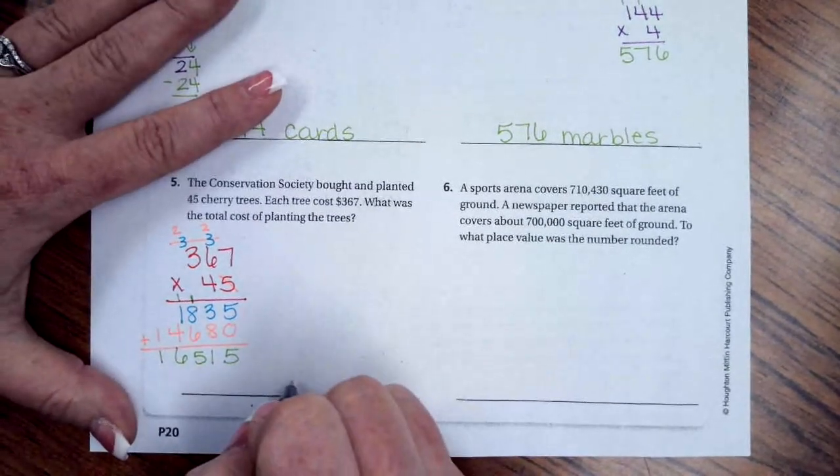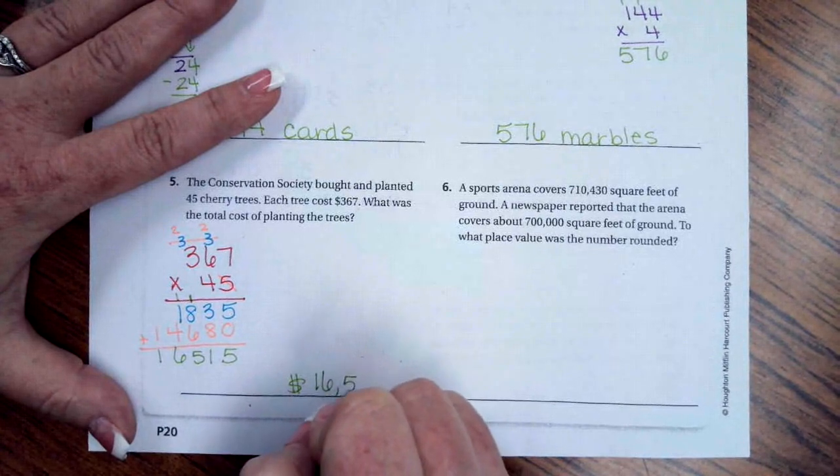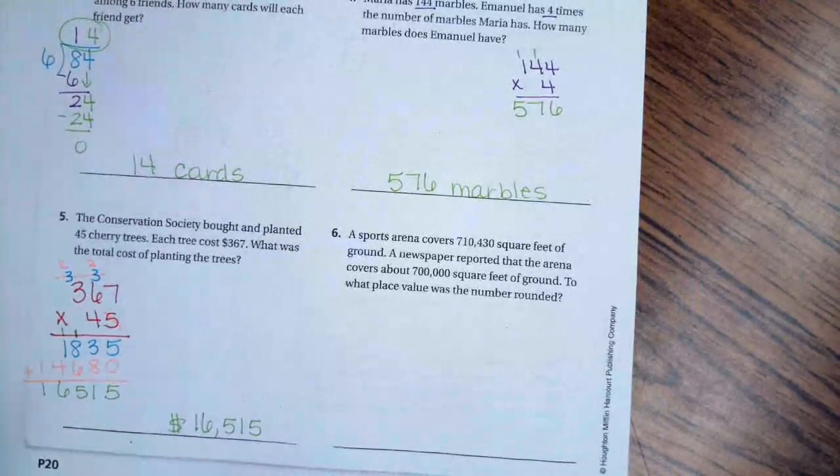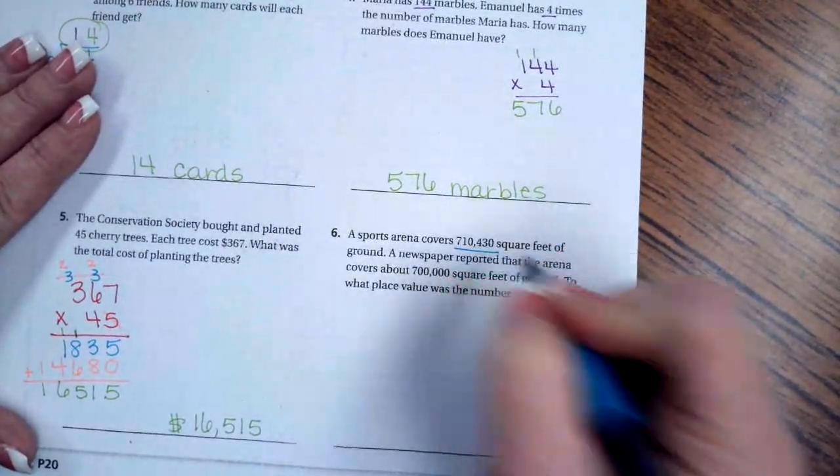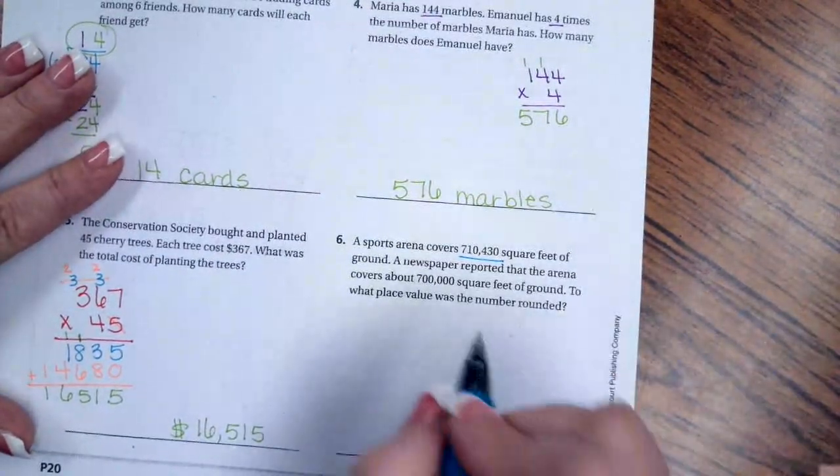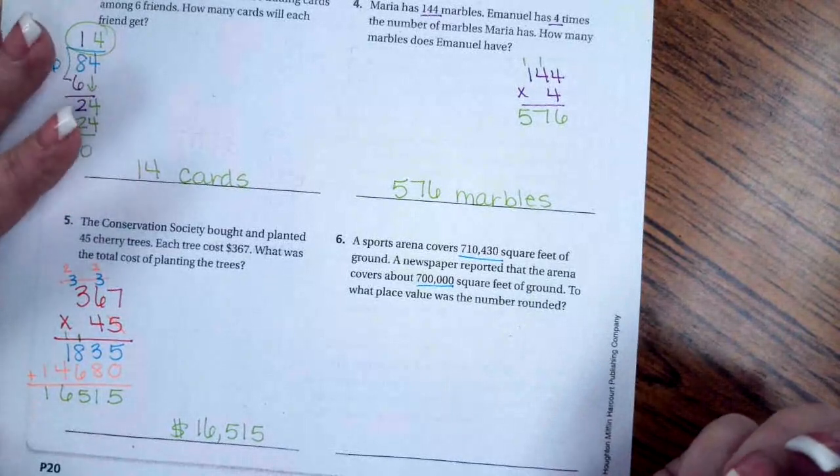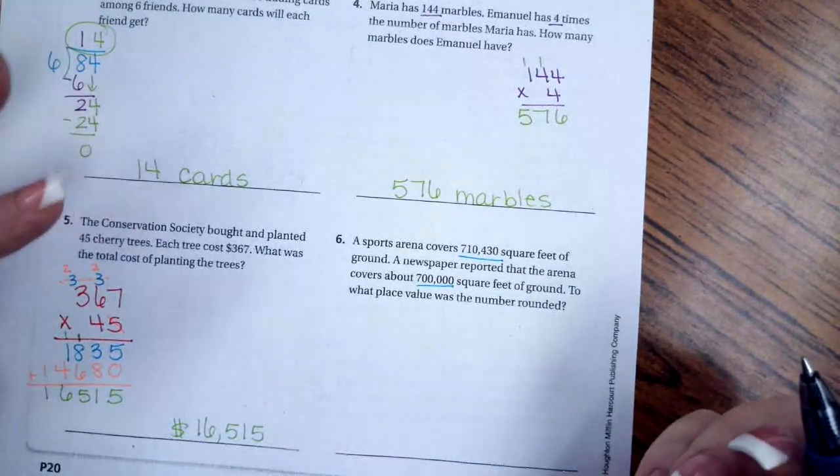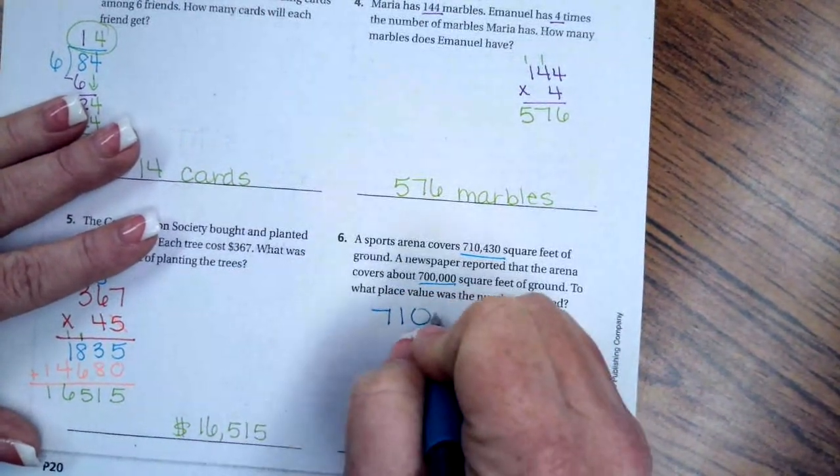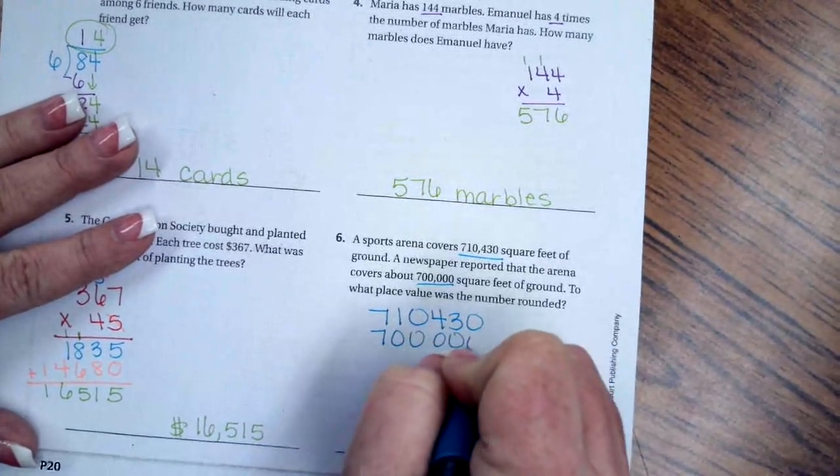Bring down. So now your total cost was $16,515. Last one, guys. The sports team covers 710,430 square feet of ground. Newspaper reported that the arena covers about 700,000 feet of ground. To which place was the number rounded?